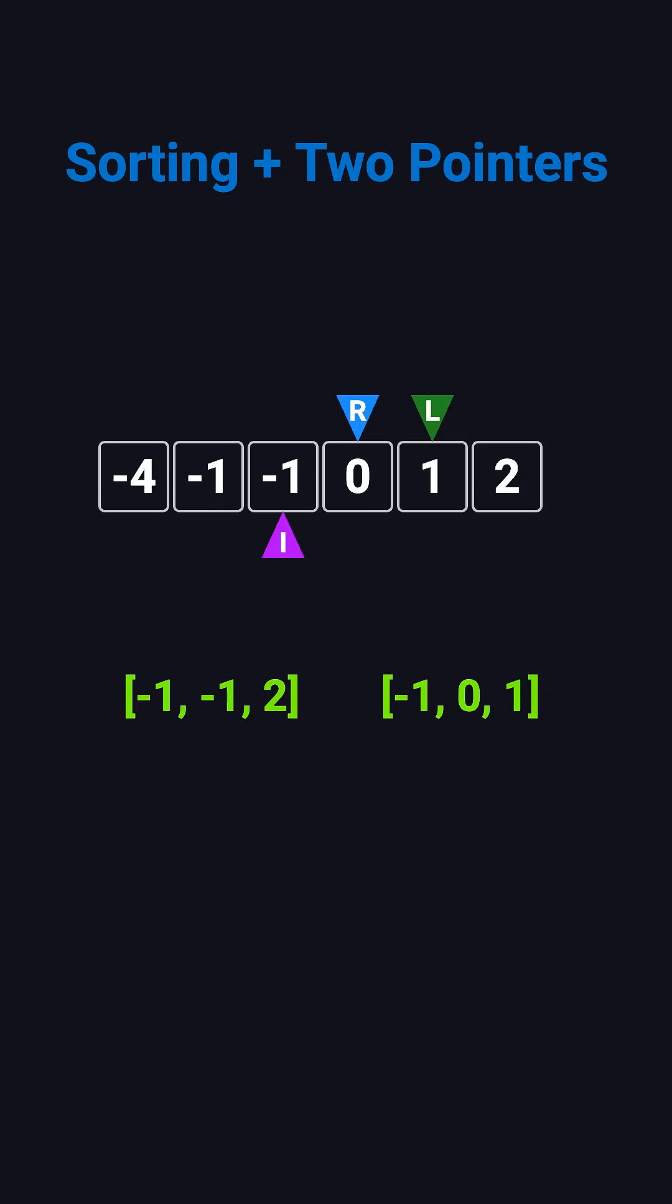Moving on, i skips the duplicate negative 1. When i reaches 0, the sum is 3, so right moves left and the pointers meet, ending this round. Finally, i cannot continue as there aren't enough numbers left. The traversal is complete.